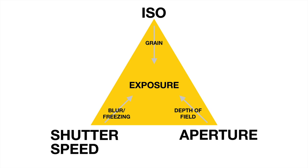The shutter speed, the ISO, and the aperture. The aperture is how large of an opening you have on the camera, which is driven by the lens. As you adjust this aperture, it lets in more light, and it also affects the depth of field. This is really related to how much of an area is in focus, particularly when close up.